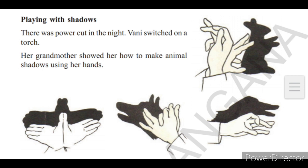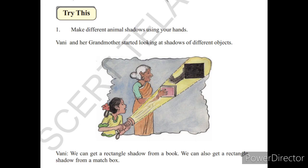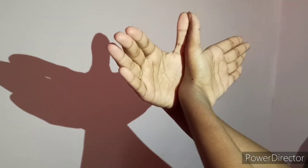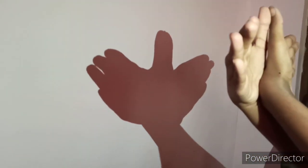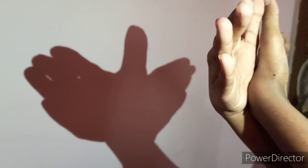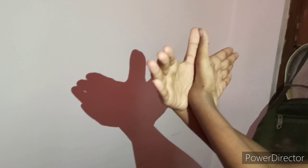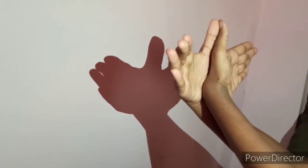Try this. Make different animal shadows using your hands. So see here we are trying to make some different animals with the shadows with hands. So here it is looking like a bat.